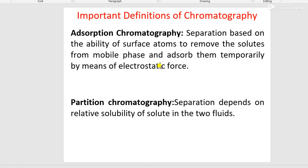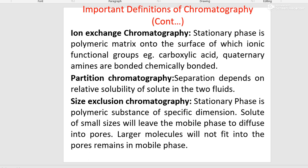Partition chromatography basically depends on the solubility of the solute in two fluids — it is mainly based on the solubility of a component in two different phases. Ion-exchange chromatography — the stationary phase is a polymeric matrix onto the surface of which ionic functional groups are attached or bonded, and separation of components is based on the charge present on the sample. The stationary phase will have functional groups like carboxylic acid or quaternary amines, and separation is based on charge.